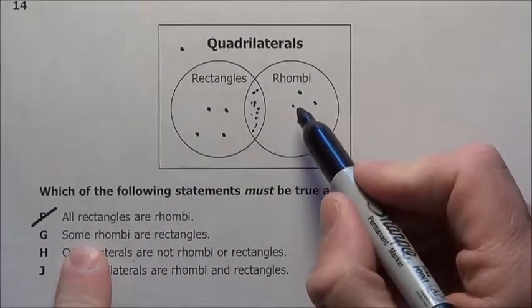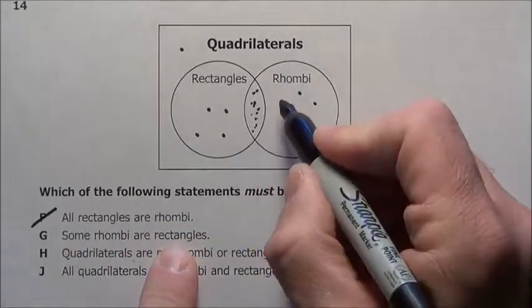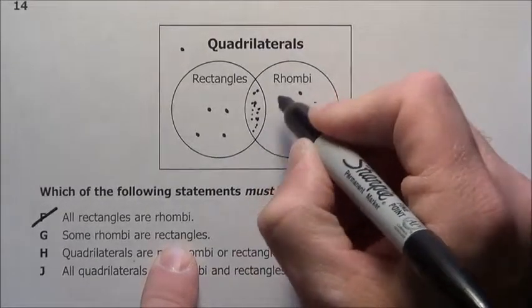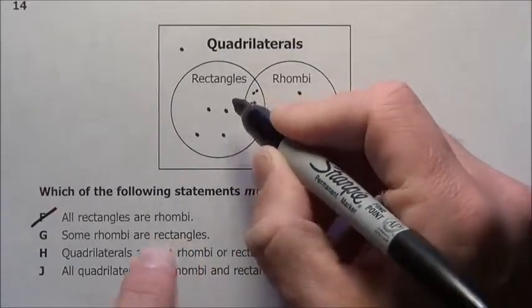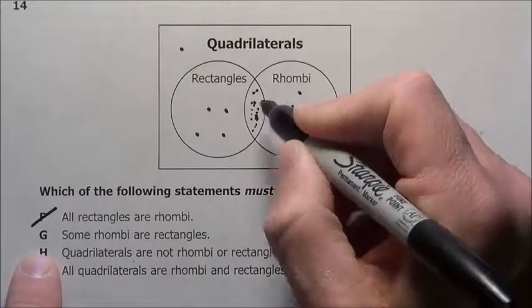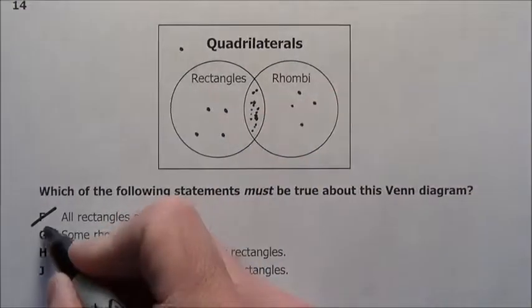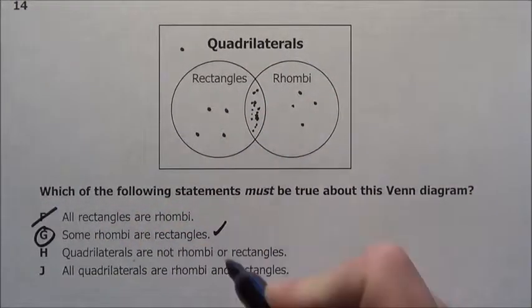Some rhombi, some of these guys, are rectangles. Yes, these guys right here, they are rhombi and they are rectangles. So some of these rhombi are in the rectangles. Choice G is what we are going to pick.